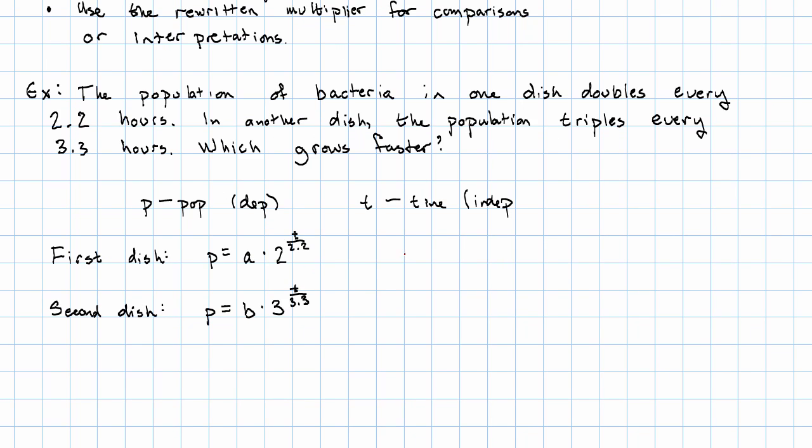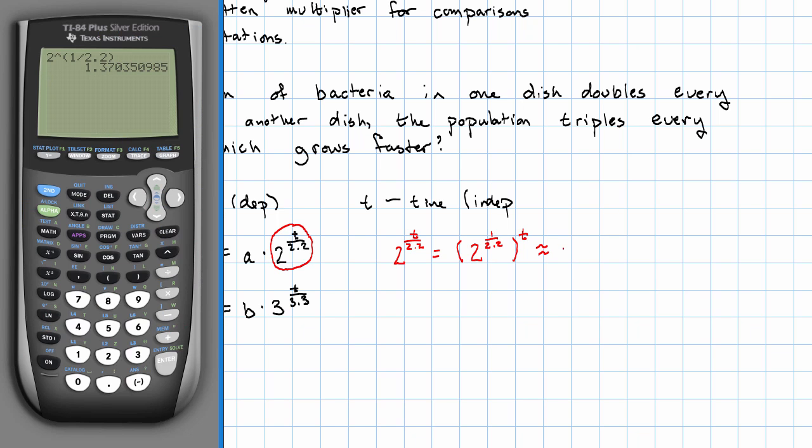In the first dish, our exponential part is 2 to the T over 2.2. That's 2 to the 1 over 2.2 to the T, which is about 1.37 to the T.